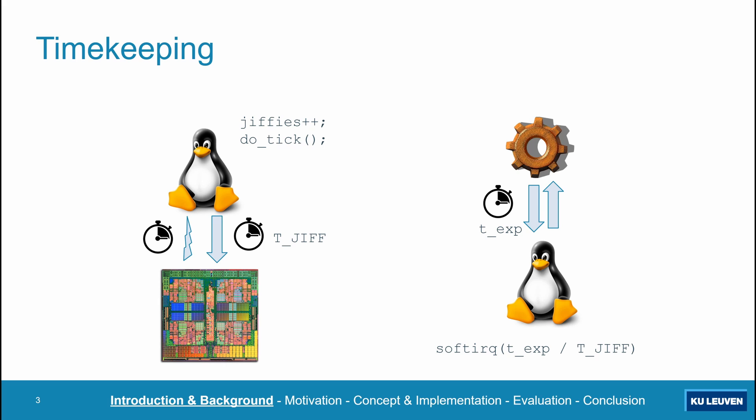Obviously, the recurring scheduler tick interrupts ensure that such a context switch takes place at least every tick period. This means that almost the entire timekeeping subsystem is backed by the scheduler tick. Knowing that many other kernel subsystems and applications rely on timekeeping in one way or another, this makes the scheduler tick perhaps one of the most critical operating system components.